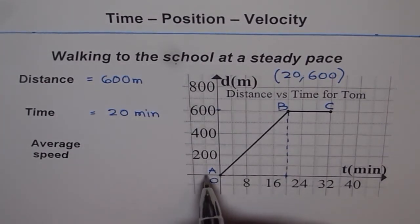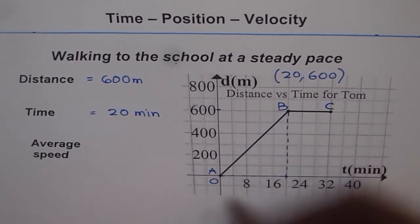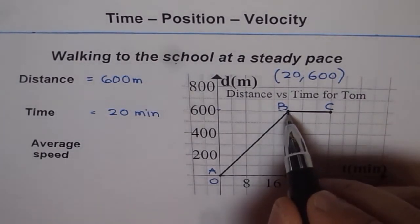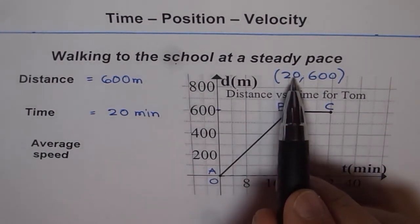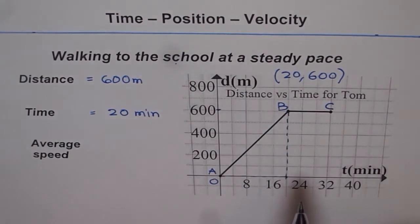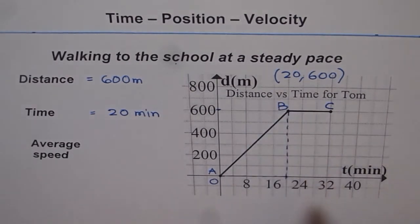Origin is always 0, 0. So that is the position of school in this coordinate plane. So the location of school is 20, 600. So that is the location of the school. It is an additional information which you can straight away read from a distance versus time graph.